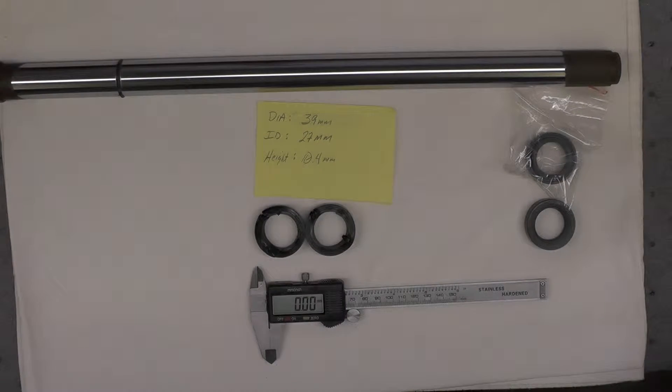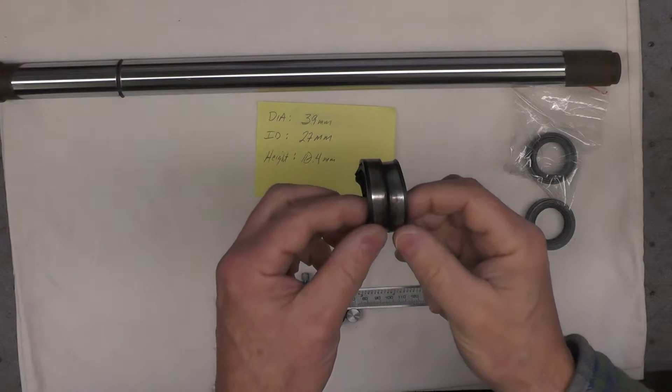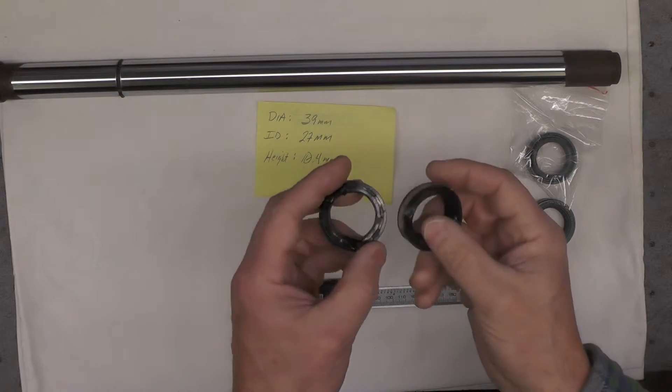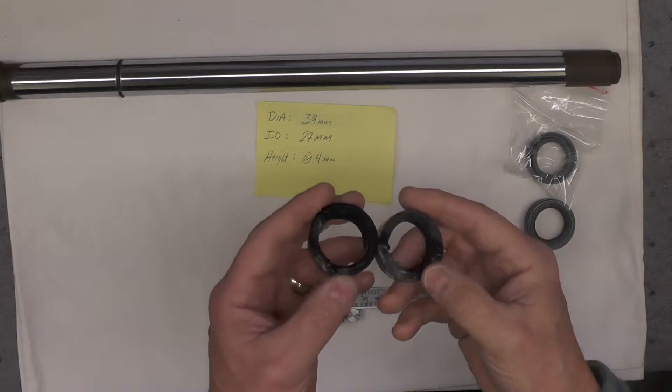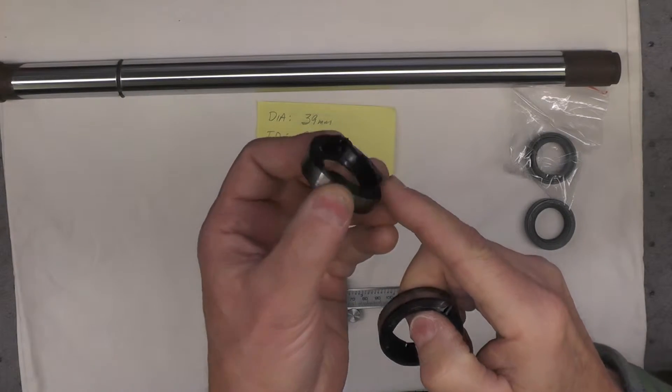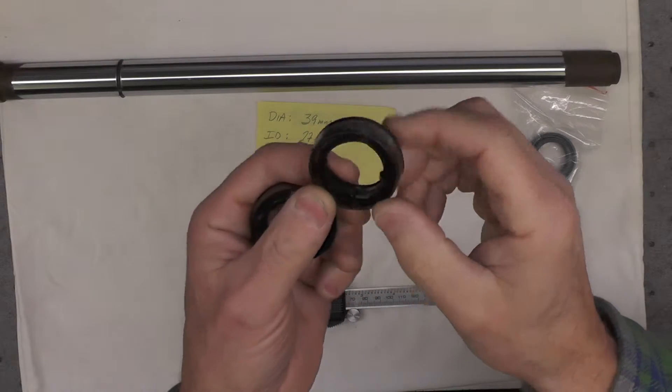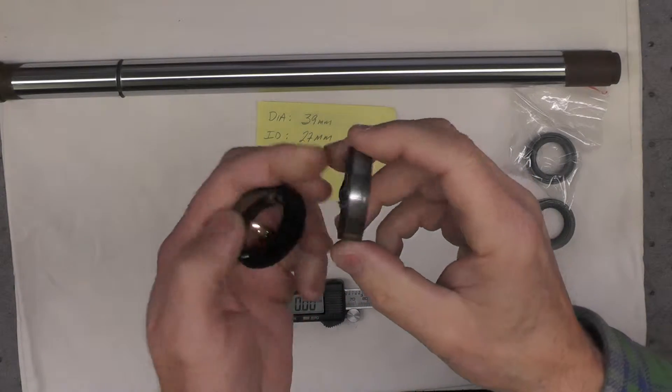Hello folks and welcome back. Today we're going to talk about a situation I ran into with the fork seals for the Yamaha YL1. These are the original seals I pulled out of the forks some time ago. I had a hard time getting these out as you can see. They're one of the most difficult sets of seals I've ever encountered in terms of forks.